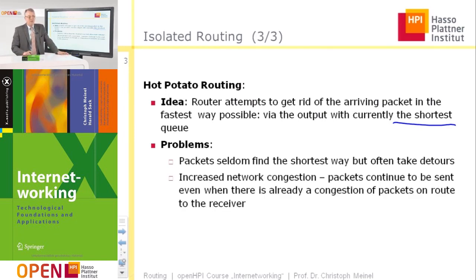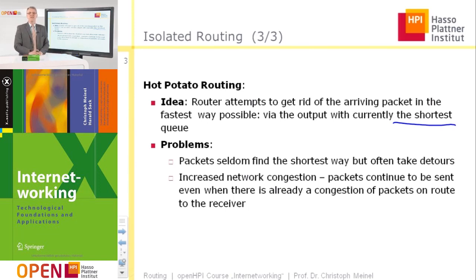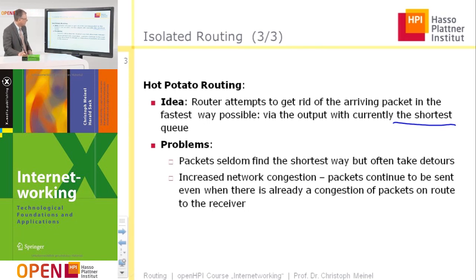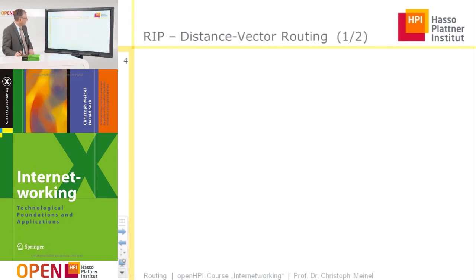Another problem with hot potato routing is increased network congestion. Packets continue to be sent even if there is already a congestion of packets on the route to the receiver. There is no information about the network situation, and often the hot potato approach increases network congestion.